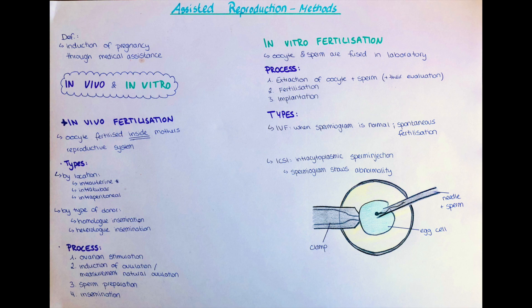The second type of in vitro fertilization is called ICSI, which stands for intracytoplasmic sperm injection. It is used when the spermiogram shows abnormalities and there is not enough morphologically healthy sperm for spontaneous fertilization to occur. One sperm is selected by the doctor and injected into the oocyte with a microneedle. After fertilization occurs and division happens as it should, the embryo will be implanted five to six days later. It is also possible to take one cell from the developing embryo for cytogenetic analysis to detect possible genetic abnormalities.